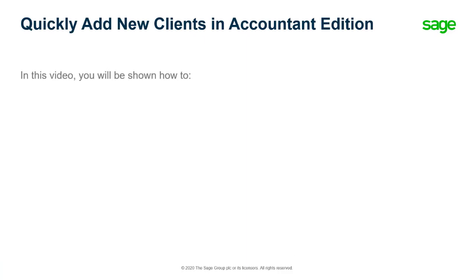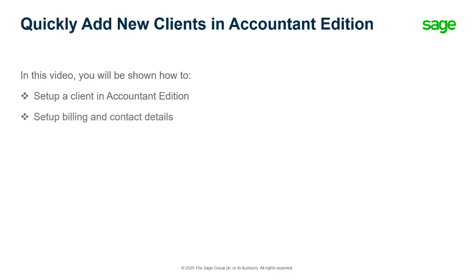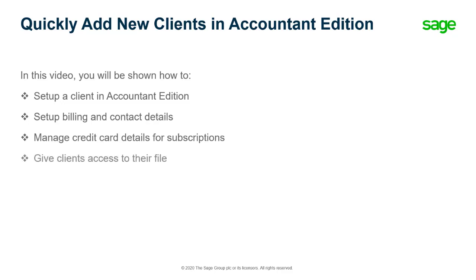In this video, you'll learn how to set up a client in Accountant Edition while retaining ownership of the file, set up billing and contact details of the subscription without having to wait for additional steps, and manage the credit card details for subscriptions you've sold through Accountant Edition. You'll also learn how to give your client access to their file and how to transfer ownership of a subscription to a client.